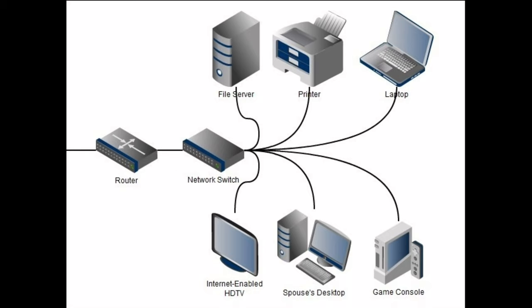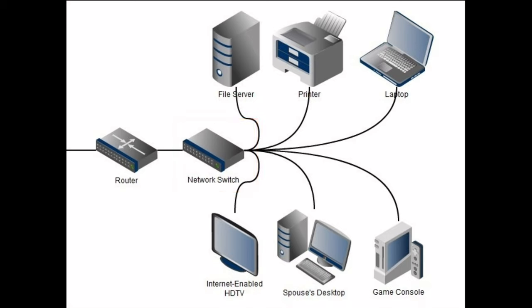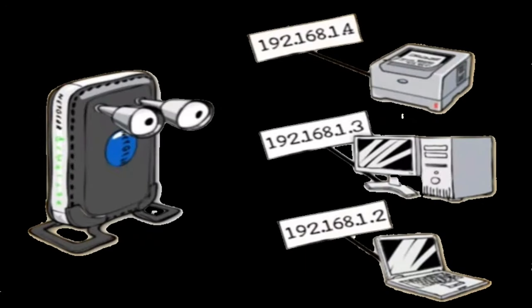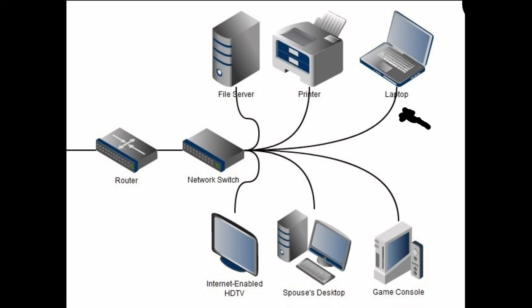Now comes an important word — the switch. What is a switch? A switch is basically a device which distributes signals to all the computers and devices. A router has a smart little computer that identifies all of the computers and devices on your network and assigns a unique number to each one, also known as an IP address.